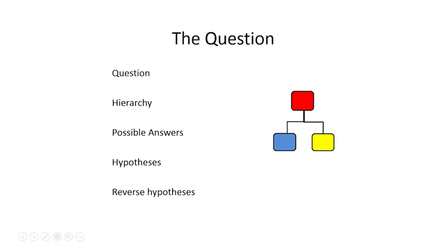Now let's see if you can formulate a hierarchy in these questions: a rational order, a chronology, a cause and effect, a problem and solution. And see, in general terms, if you have any possible answers — well, you should have by now if you've been reading the literature — and write them down in question form.